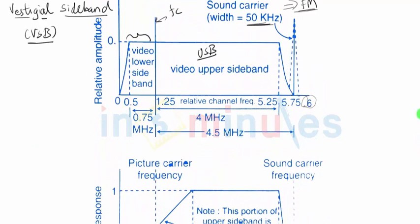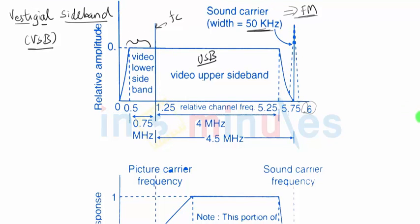So this is called vestigial sideband. To summarize it's nothing but a version of AM system in which you allow upper sideband completely to come at the output side and a small part of lower sideband also. This is to relax a very strict design of the filter which we otherwise require in single sideband transmission.